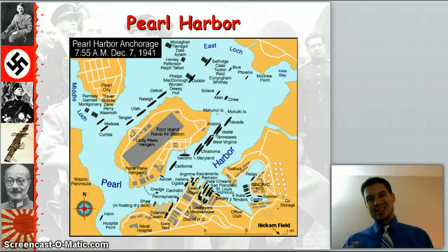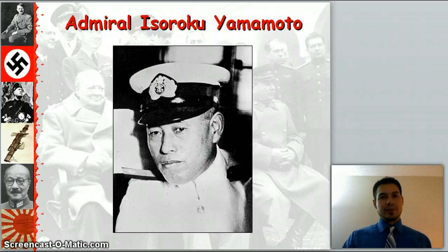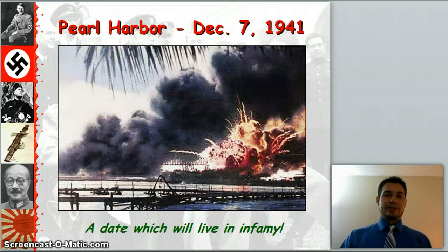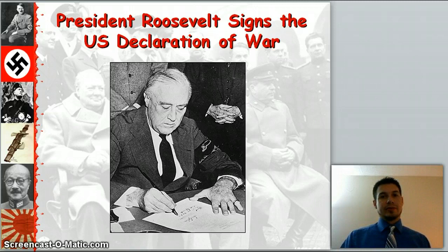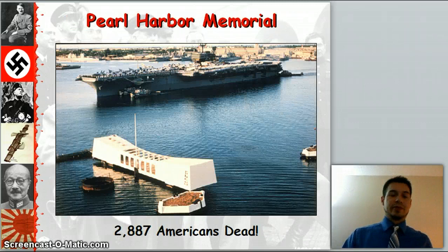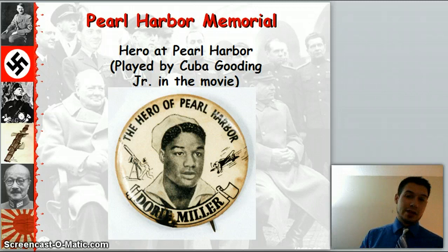Meanwhile, we have Pearl Harbor. This happens December 7, 1941. The Japanese attack the U.S. Naval Forces at Pearl Harbor, led by Admiral Yamamoto. It was a huge, devastating defeat for the U.S. — 'a date that will live in infamy,' as FDR said. We declare war on Japan, and soon enough Germany declares war on us the next day. The USS Arizona sank during the battle. One of the biggest heroes was Doris Miller, who grabbed one of the 50-caliber machine guns during the Pearl Harbor attack and shot down enemy aircraft — even though he was just an African-American cook in the Navy.